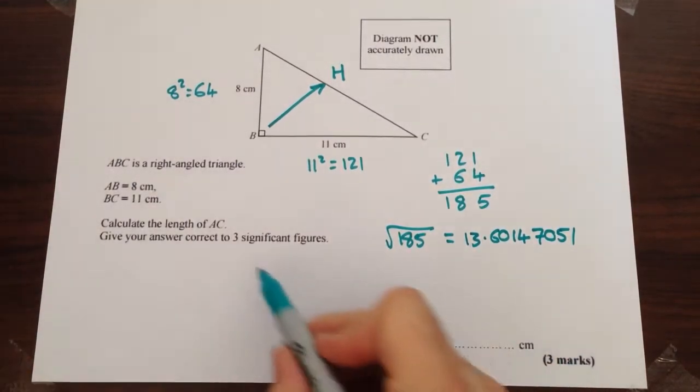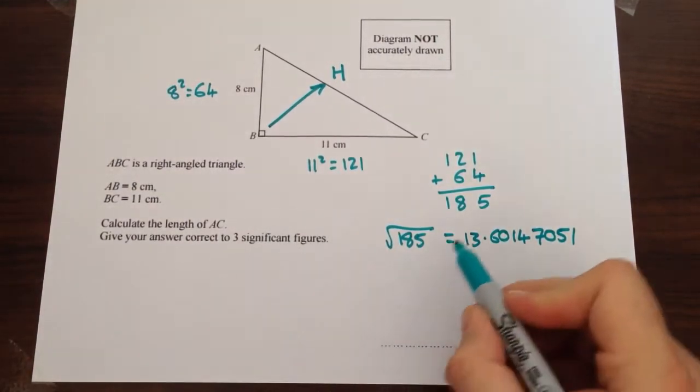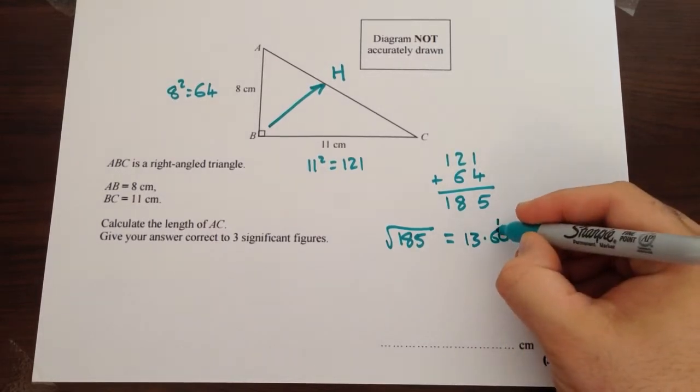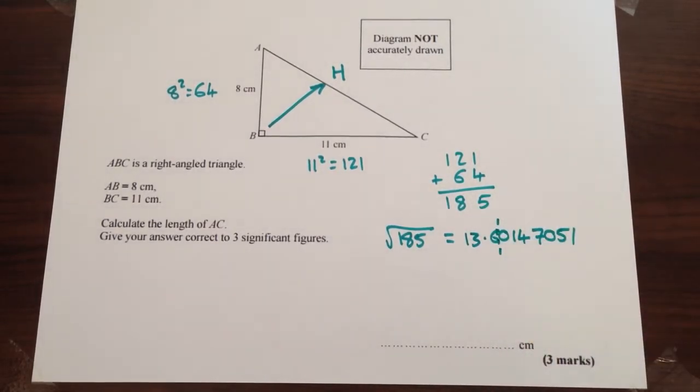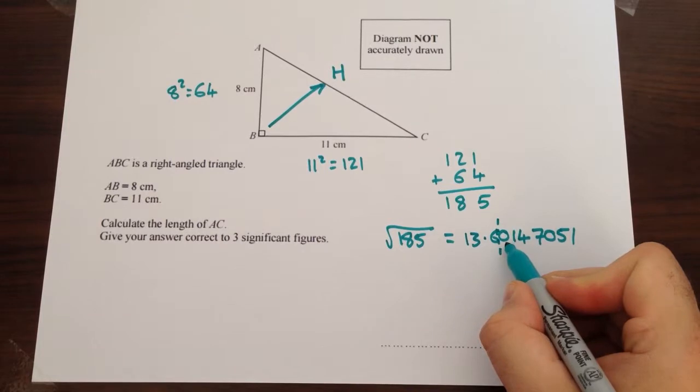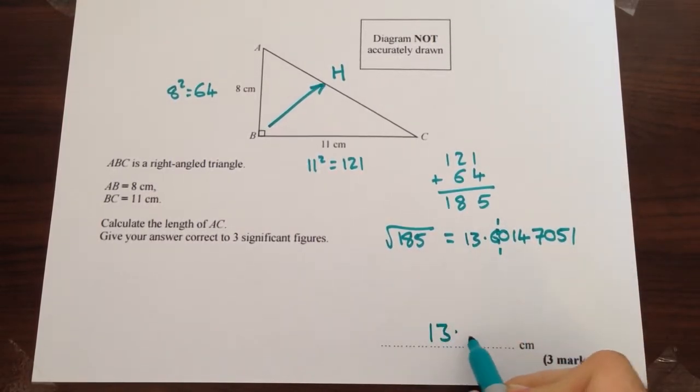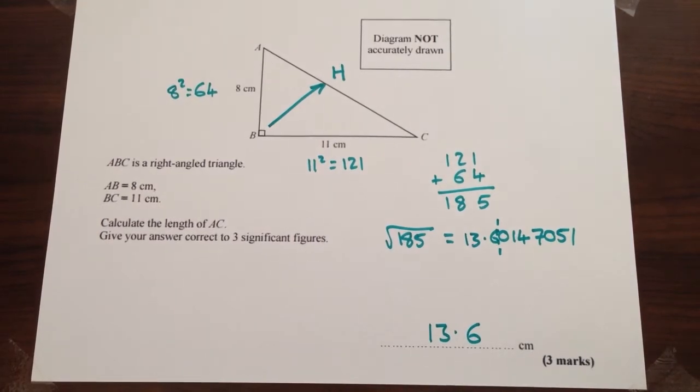Now go back to the question, we were asked for three significant figures so we'll start counting from there. So that's one, two, three, so after the six is going to be our cutoff. Check the next number is zero which doesn't affect the six so our final answer is 13.6 centimeters.